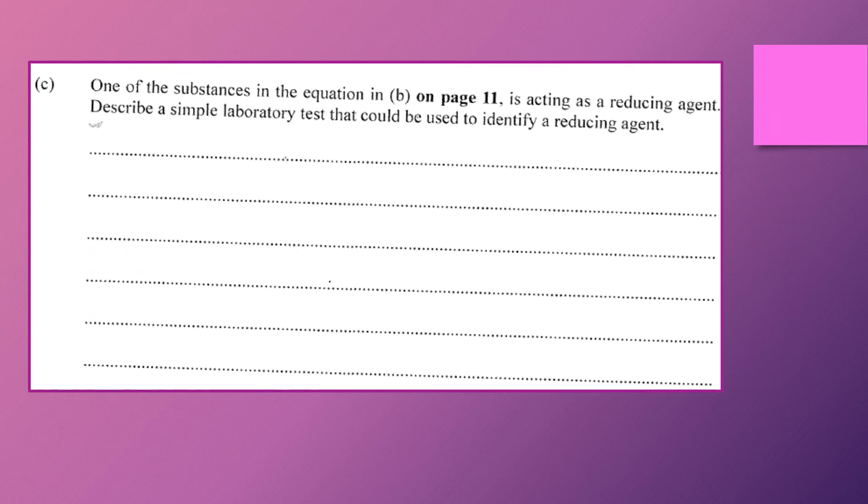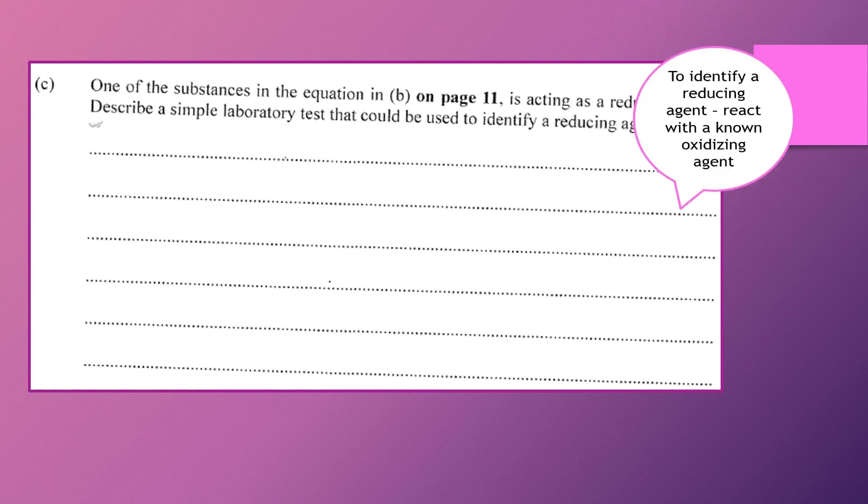So let's look at part C. It says one of the substances in equation B that was used earlier is acting as a reducing agent and we're to describe a simple laboratory test that could be used to identify a reducing agent. So how do we normally identify if a substance is a reducing agent?